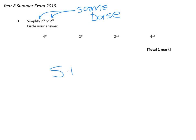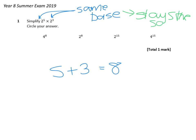So adding the powers together, 5 plus 3 gives us 8, and we remember that the same base stays the same. Therefore, the base stays as 2, which discounts these two options, and the power is 8, so we're looking for 2 to the power of 8.